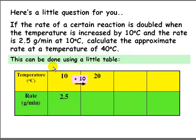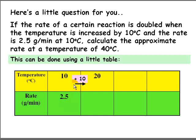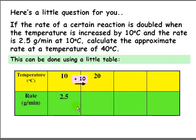One way to solve this is with a table of temperature and rate. If the temperature is 10 degrees, the rate is 2.5 grams per minute. When we increase the temperature by 10 degrees to 20 degrees, the rule states that every 10-degree increase doubles the rate. So 2.5 times 2 becomes 5 grams per minute.